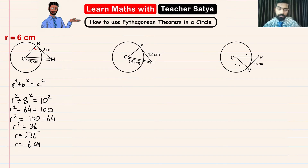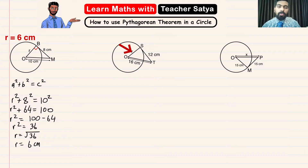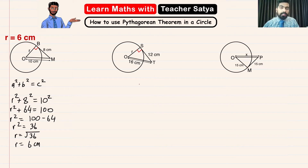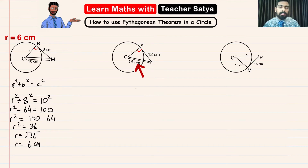For question number 2, let's first find the right angle. ST is the tangent and SO is the radius, so this angle right here will be our right angle. We identify the hypotenuse as the side opposite to the right angle, which is OT, measuring 16 centimeters.